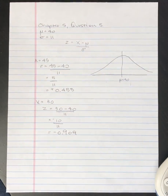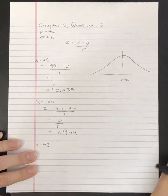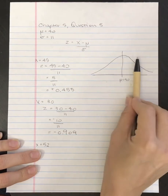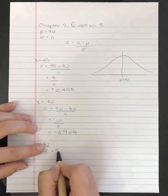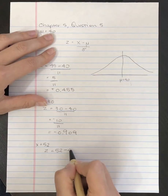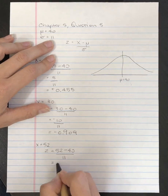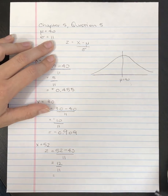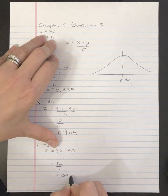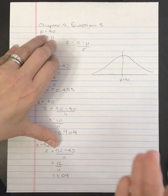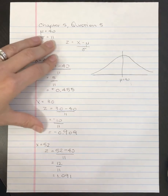The next x score in the question is x equals 52. Since 52 is larger than 40, it's somewhere over here — we're expecting a positive z-score. So z equals 52 minus the mean of 40, divided by 11, because the standard deviation remains the same. That gives us 12 divided by 11, which equals 1.0909 repeating, so 1.091 rounded to three decimals.